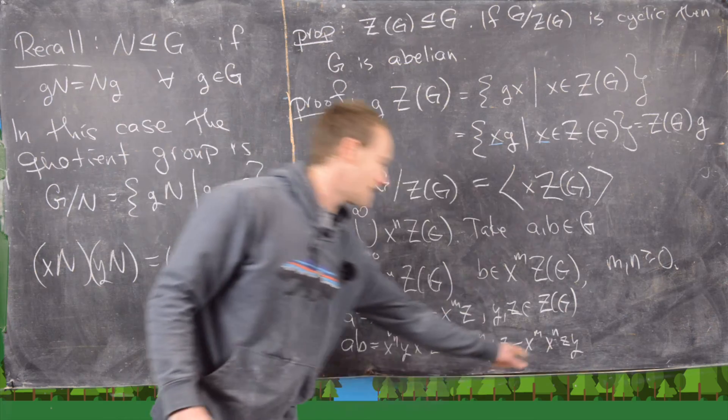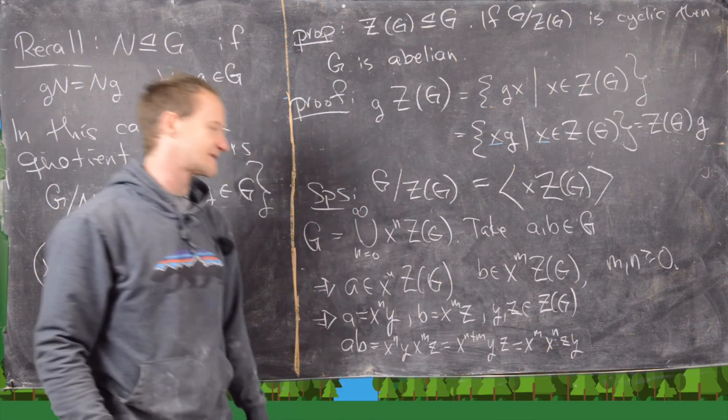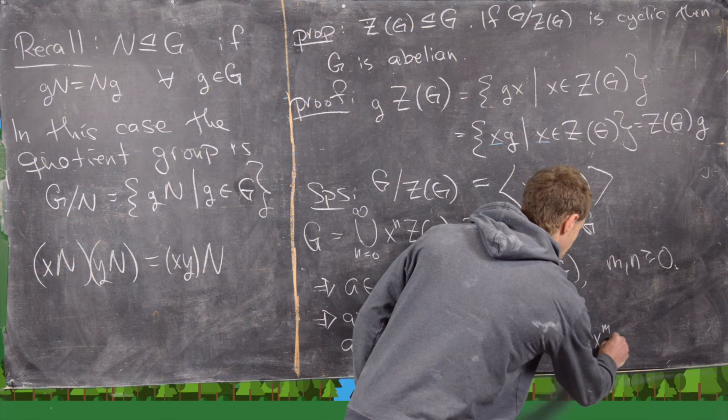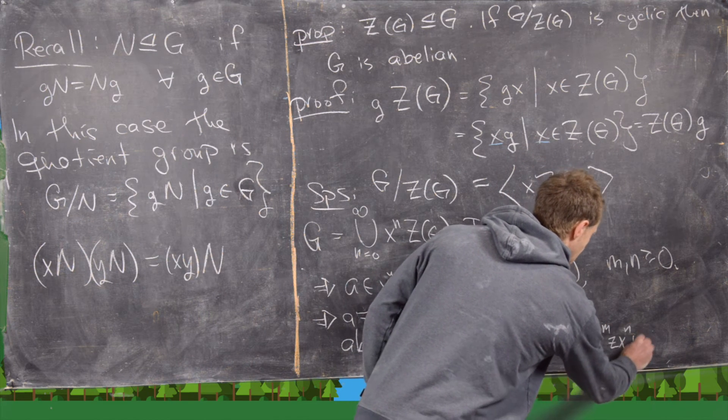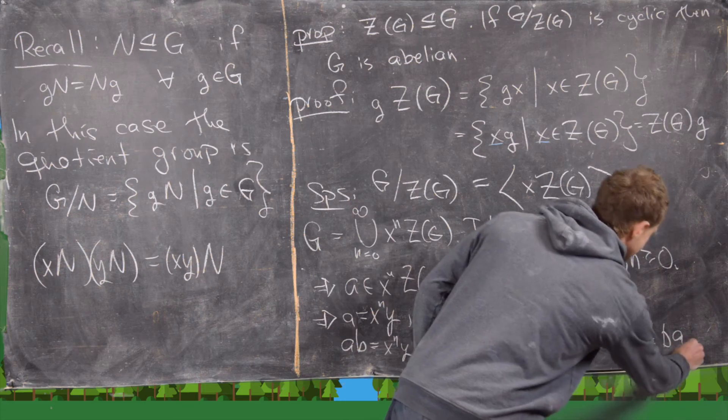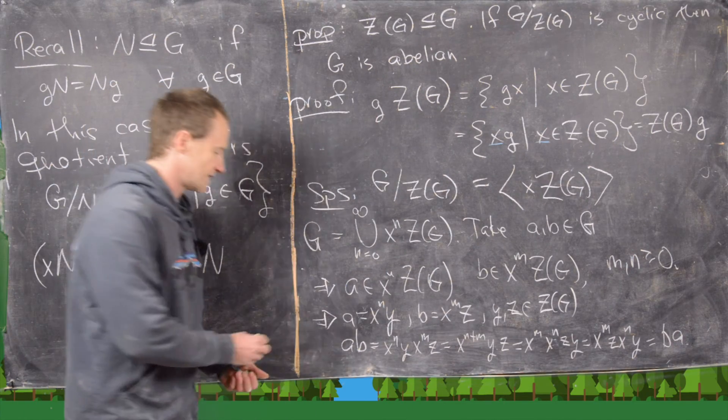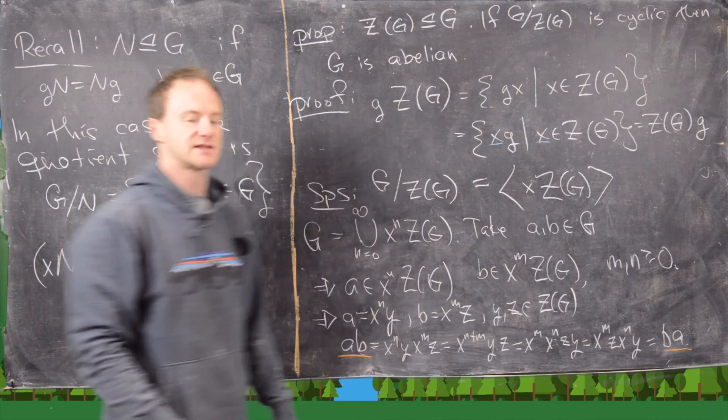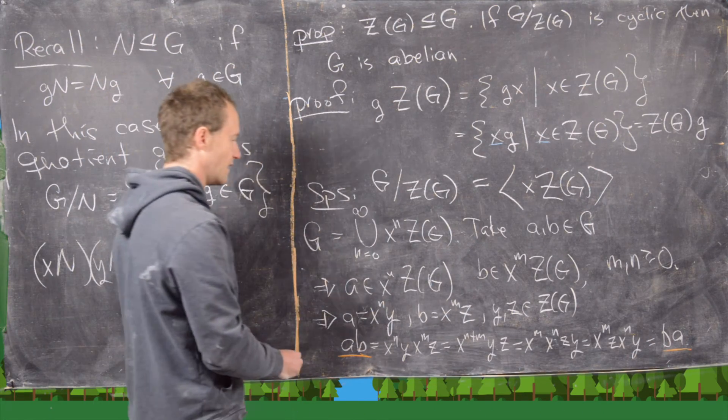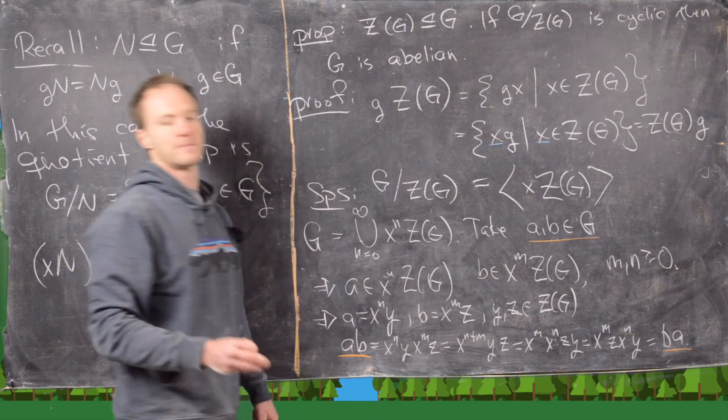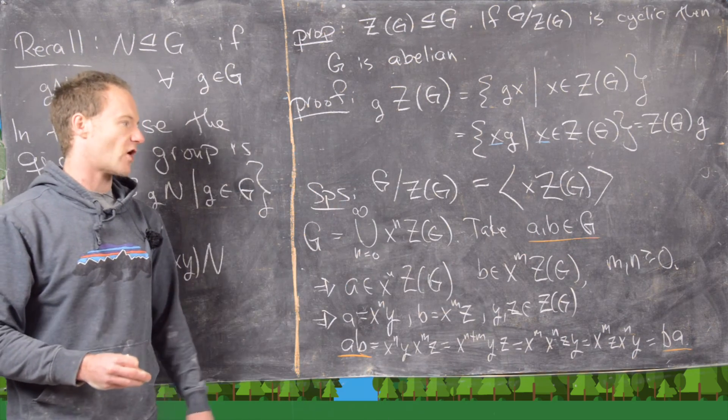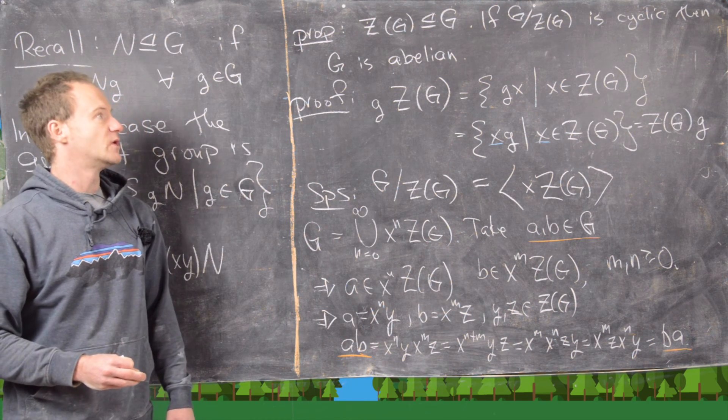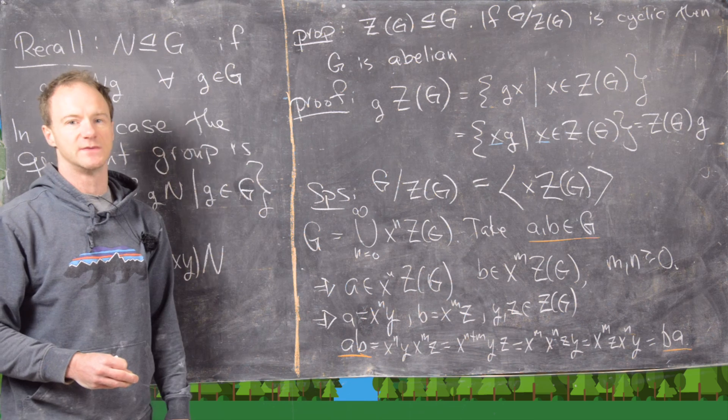So that's Z times Y, and then finally, we will move Z past X^N, and we can do that because Z is in the center. So this is going to be X^M Z, X^N Y, which notice that's exactly equal to BA. So let's look at the extreme left and the extreme right-hand side of this, and those were arbitrary elements from our group, which tells us that if we have arbitrary elements of our group AB, we have AB equals BA, which is the same thing as saying the group is abelian.